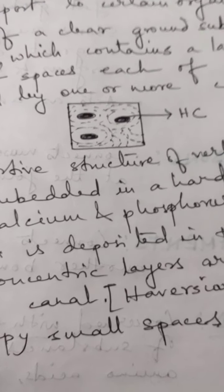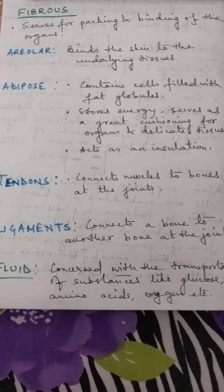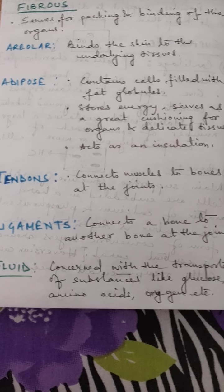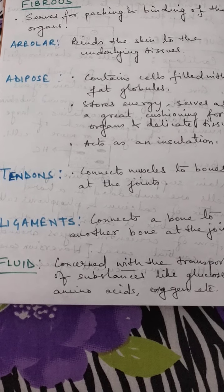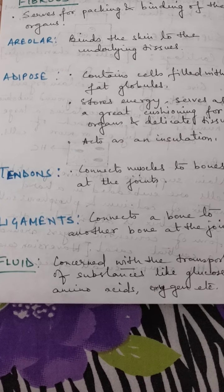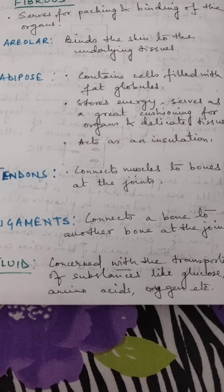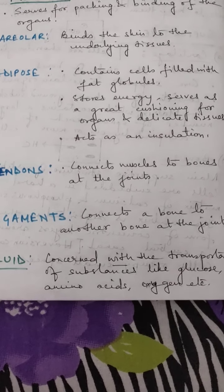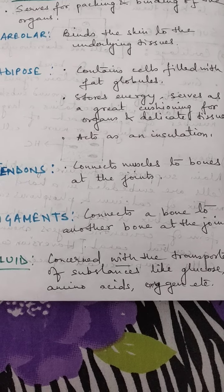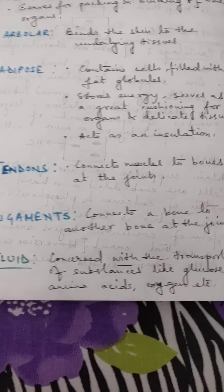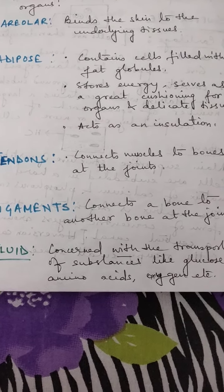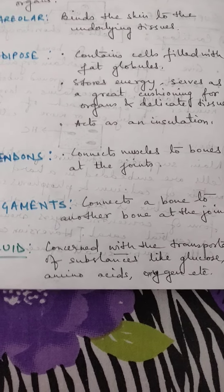The next type is fibrous. It serves for packing and binding of the organs — it's a packing tissue. Areolar binds the skin to the underlying tissues. Adipose contains cells filled with fat globules, stores energy, serves as cushioning for organs and delicate tissues, and acts as an insulator. Tendons connect muscles to bones at the joints, and ligaments connect a bone to another bone at the joint. These are the four types of fibrous tissue.